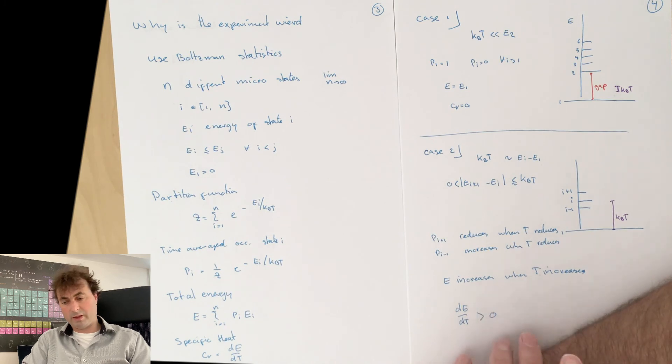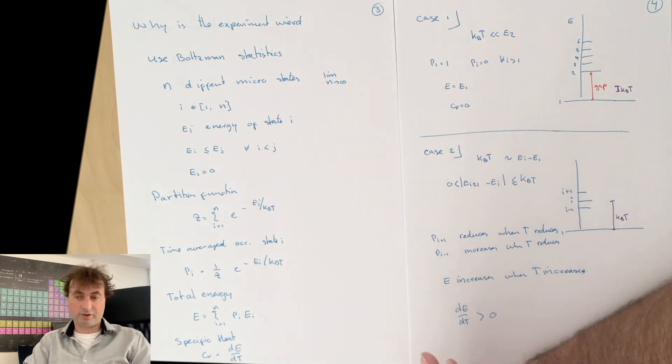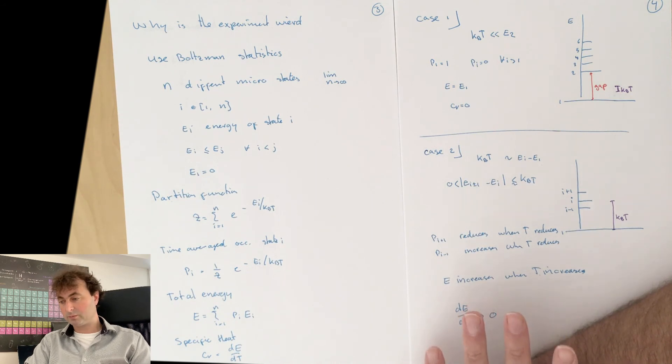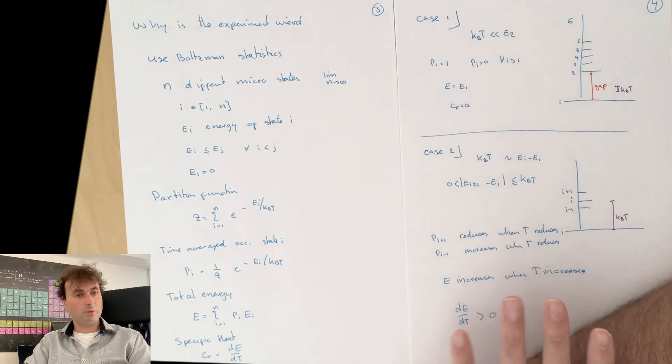But for aluminum, something strange went on. There we found that we have effective positively charged charge carriers in our system, or a negative charge density, which would be equally weird.